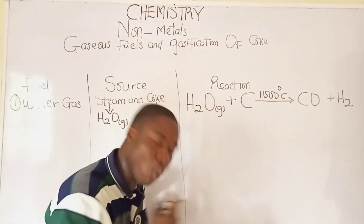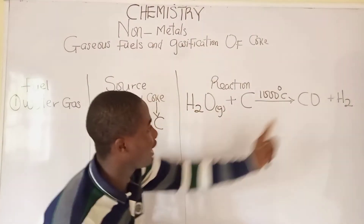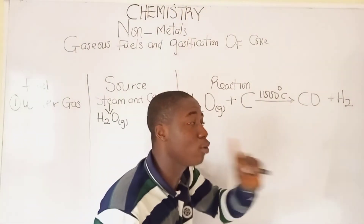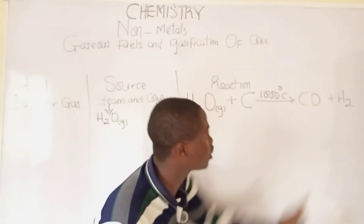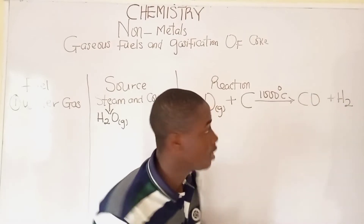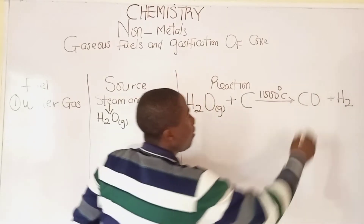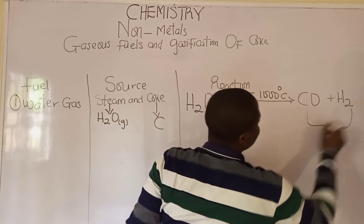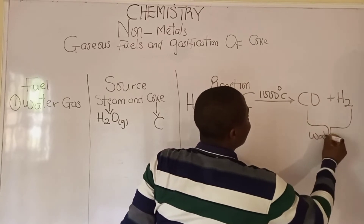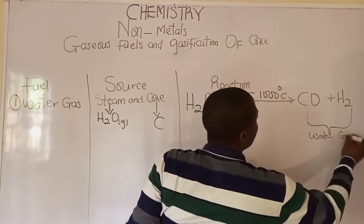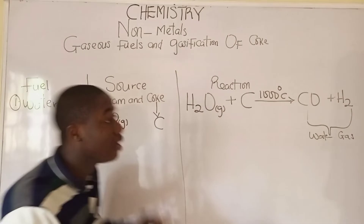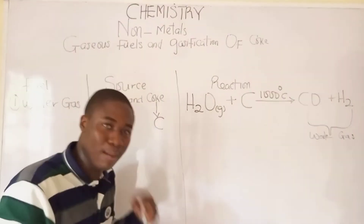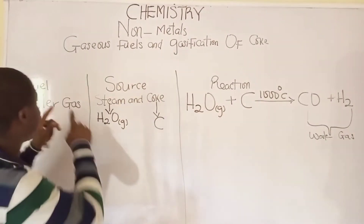So whenever gaseous water (steam) reacts with coke (carbon) at about 1000°C, we get carbon monoxide plus hydrogen gas. This mixture we've obtained is called water gas, which is an example of a gaseous fuel.